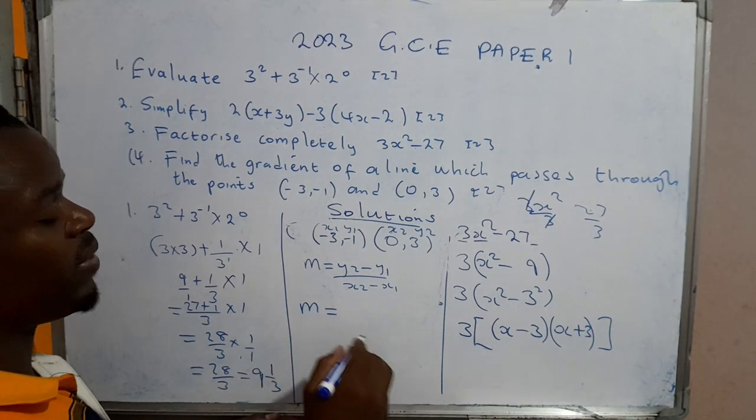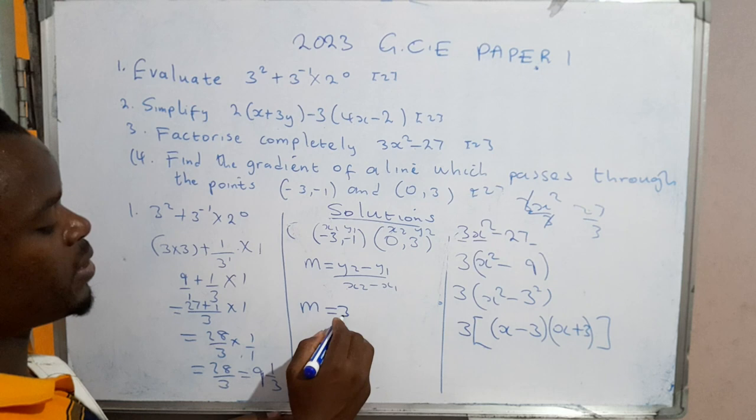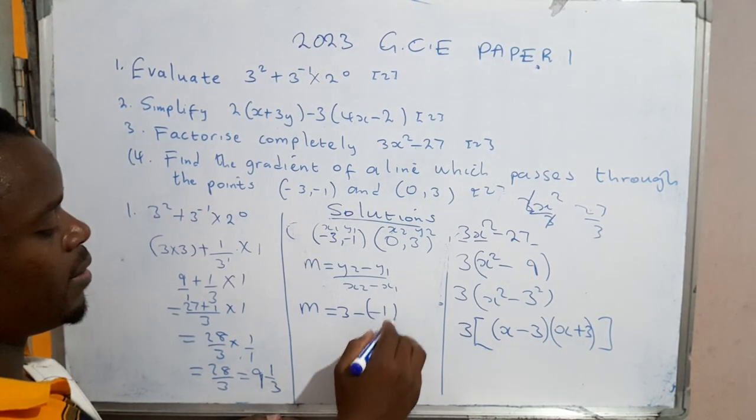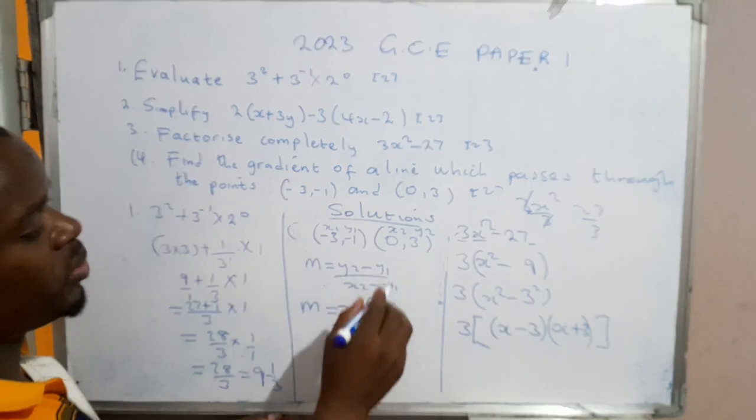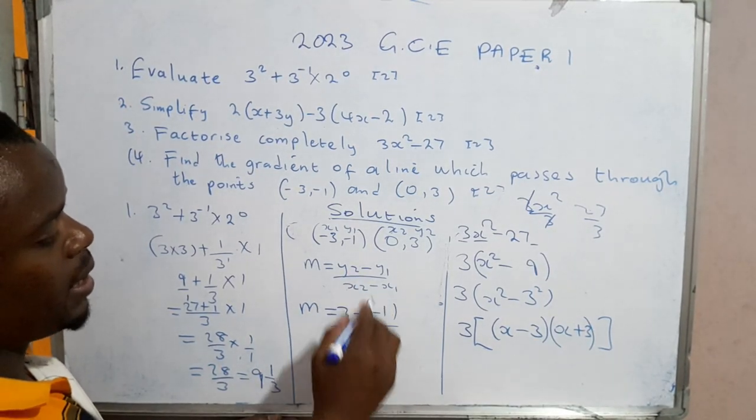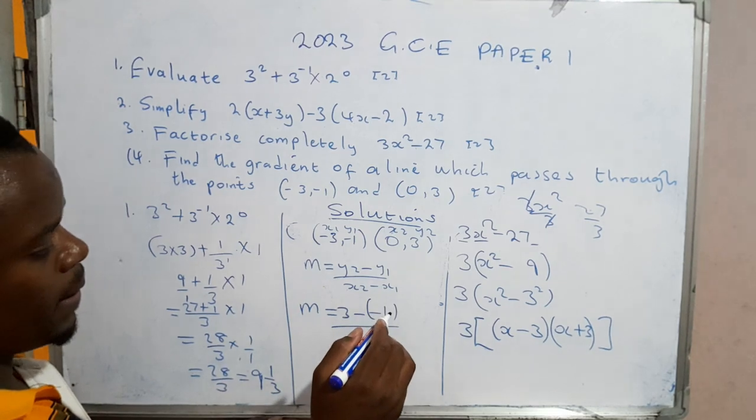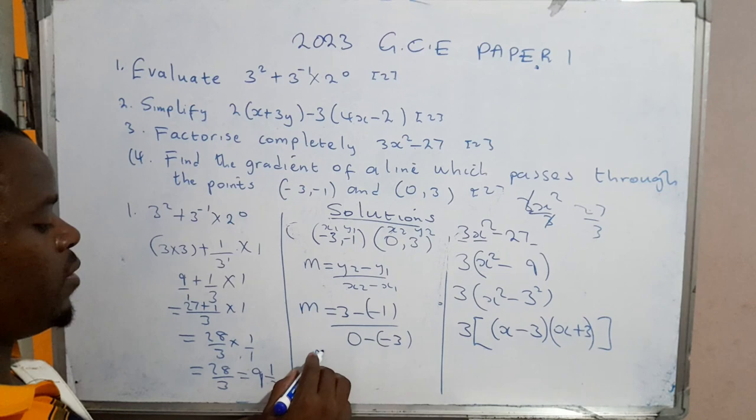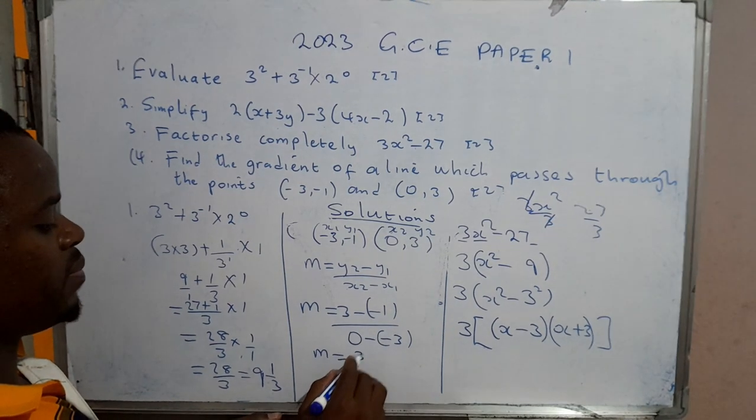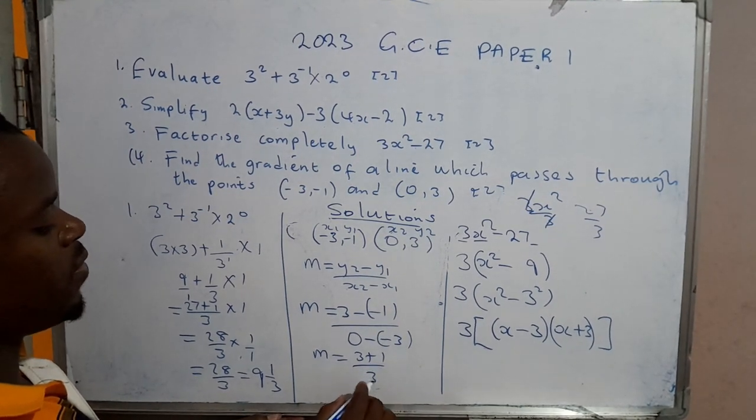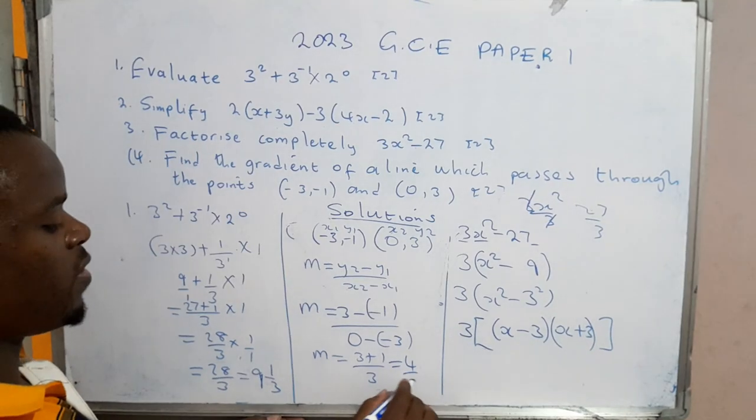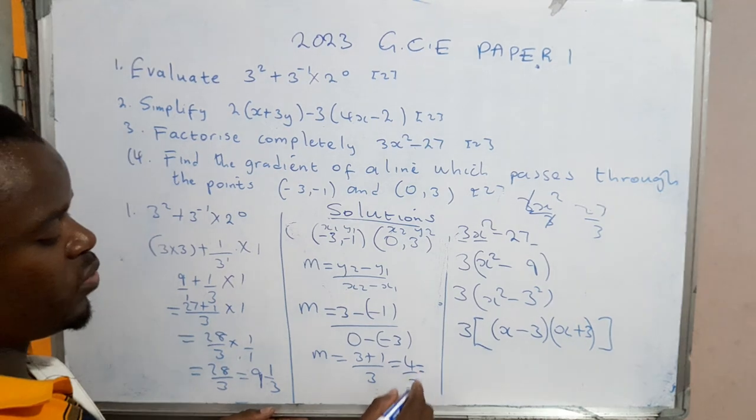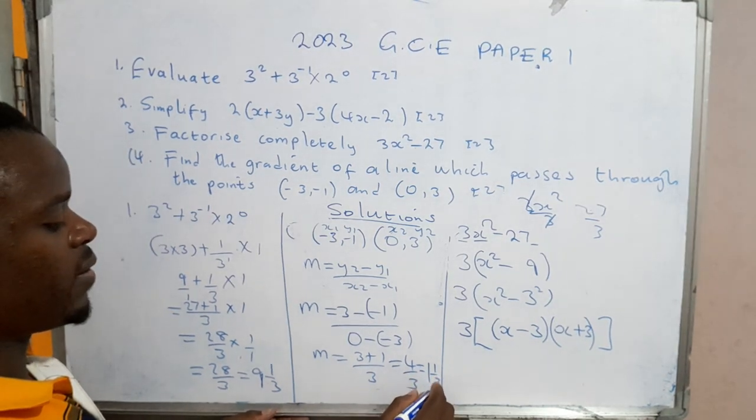Gradient is given by m = (y₂ - y₁) / (x₂ - x₁). From here you simply plug in the values. y₂ is 3, minus y₁ which is -1, over x₂ which is 0, minus x₁ which is -3. So the gradient is (3 + 1) / 3, which equals 4/3. We can leave it like that or simplify it to 1⅓.